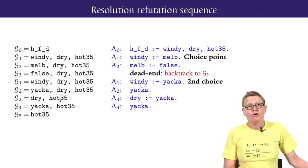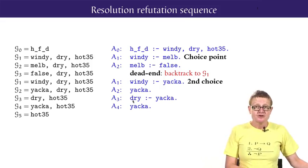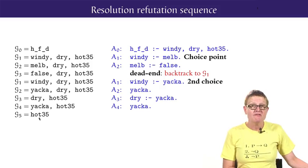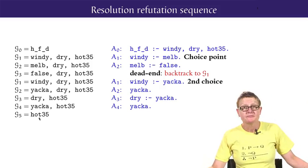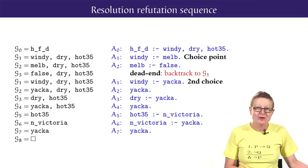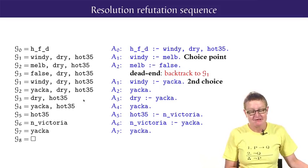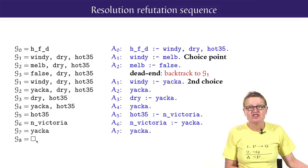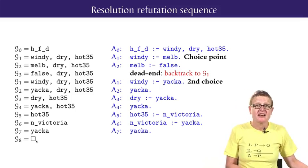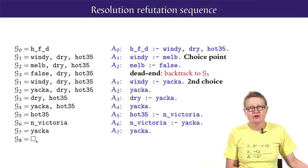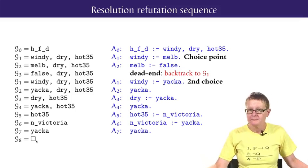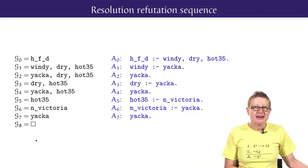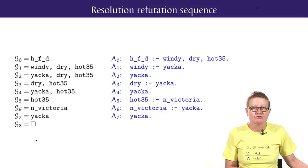Then Prolog looks for all the program clauses with dry as its head. There is only one of them, dry if yakka. Two steps of resolution then get down to goal G5, the single atom hot35. Then Prolog looks for all the program clauses with hot35 as its head. There is only one, hot35 if northern Victoria. Three steps of resolution then gets to goal G8, the empty goal. So success. The original goal high fire danger is the logical consequence of the logic program. After excising the dead ending backtracking detour, we can see the cleaned up resolution refutation sequence for this successful logical consequence query.